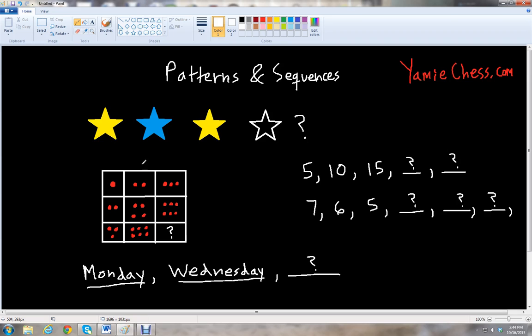If we look at this pattern with the stars, we have a yellow star, then a blue star, then a yellow star. So what color star would come in this pattern? If you guessed it right, it would be the blue star. So we go yellow, blue, yellow, blue. That is the pattern or the order in which those stars appear.